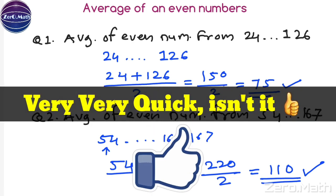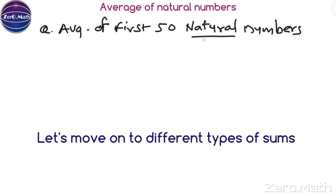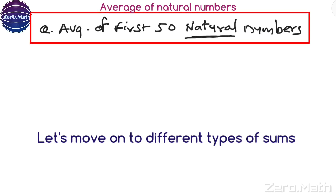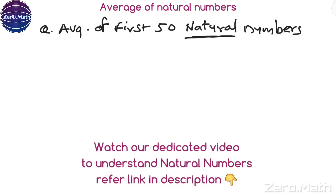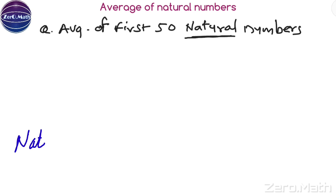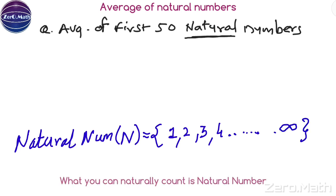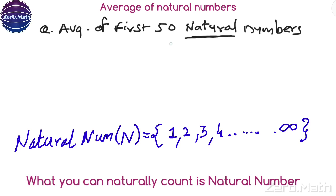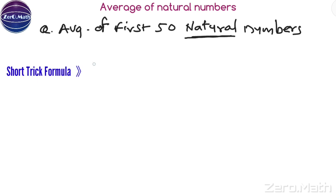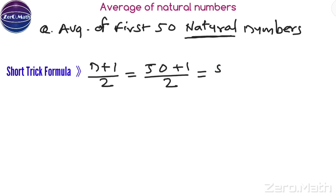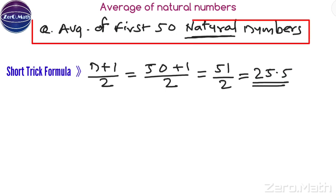I hope you find this trick really easy and helpful. Another type of question asked in exams: find the average of the first 50 natural numbers. Natural numbers start with 1, 2, 3, 4, and you can count them to infinity. The short trick: average of first N natural numbers = (N + 1) / 2. Here N = 50, so (50 + 1) / 2 = 51 / 2 = 25.5, which is the average of the first 50 natural numbers.